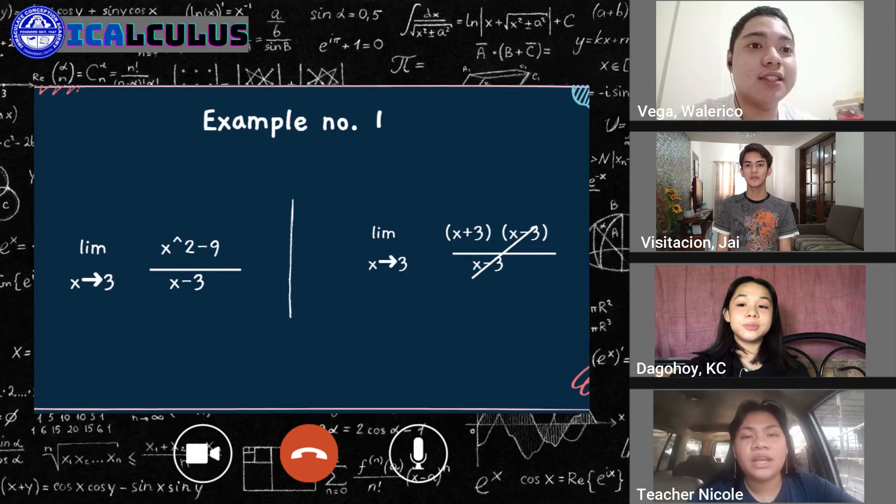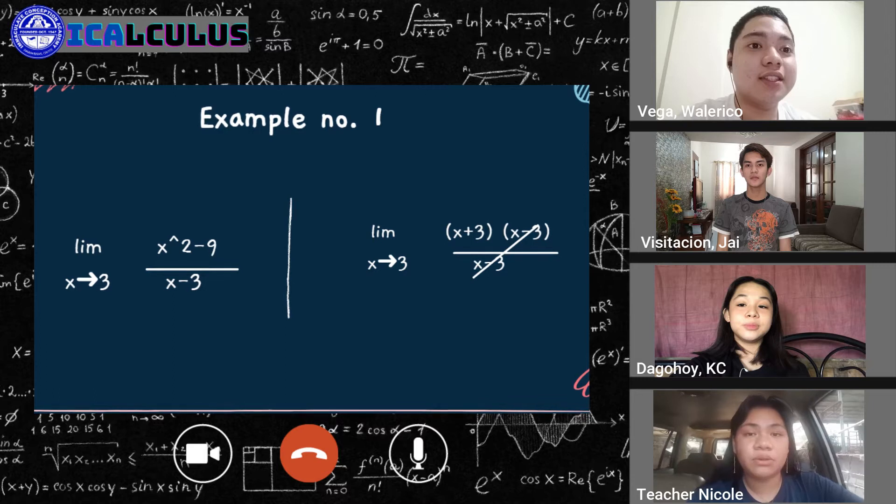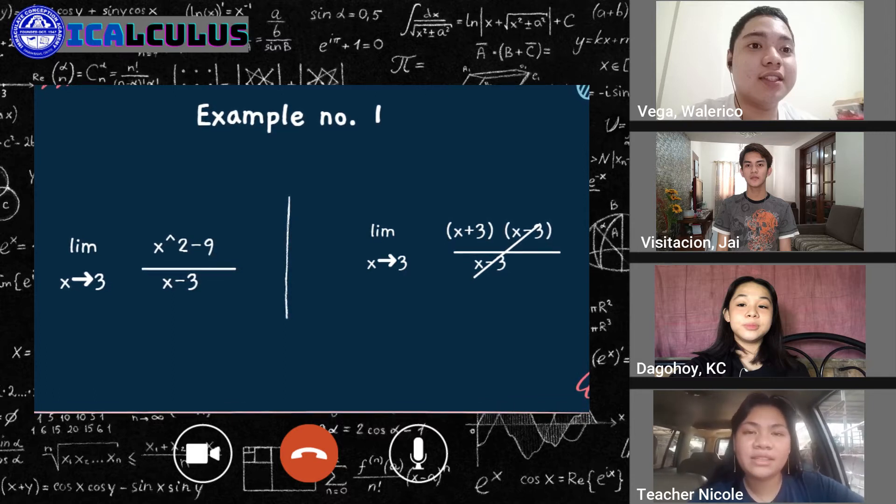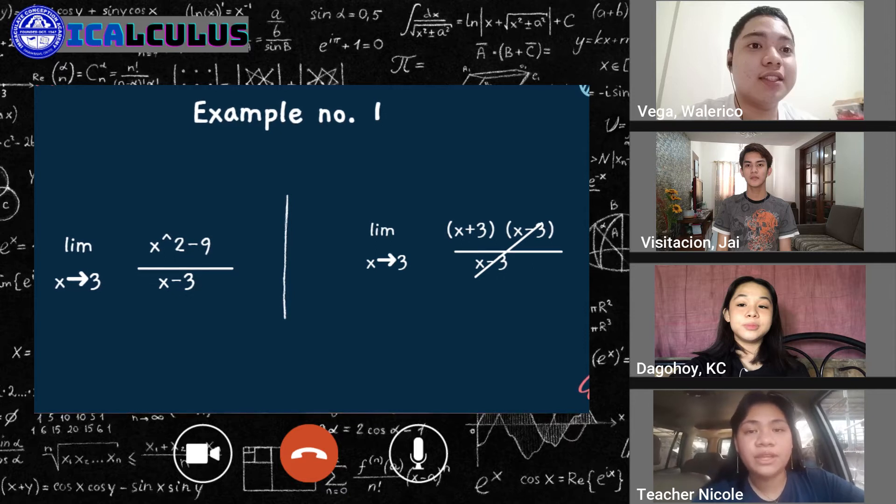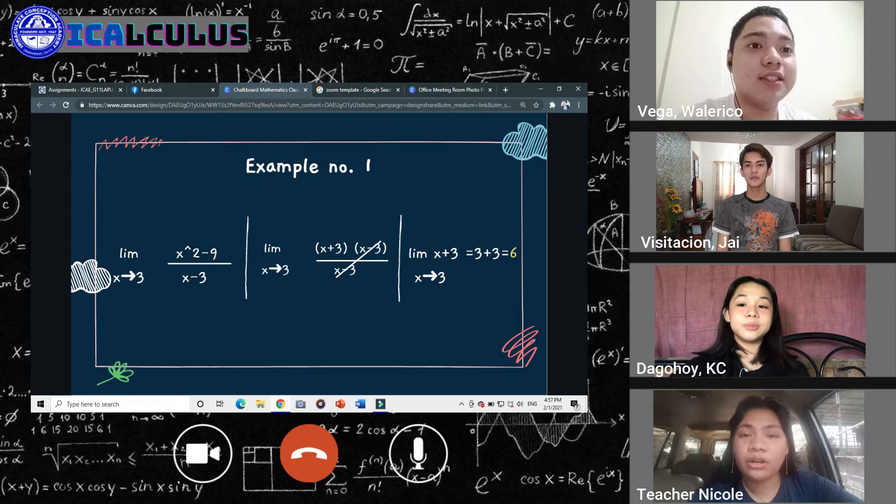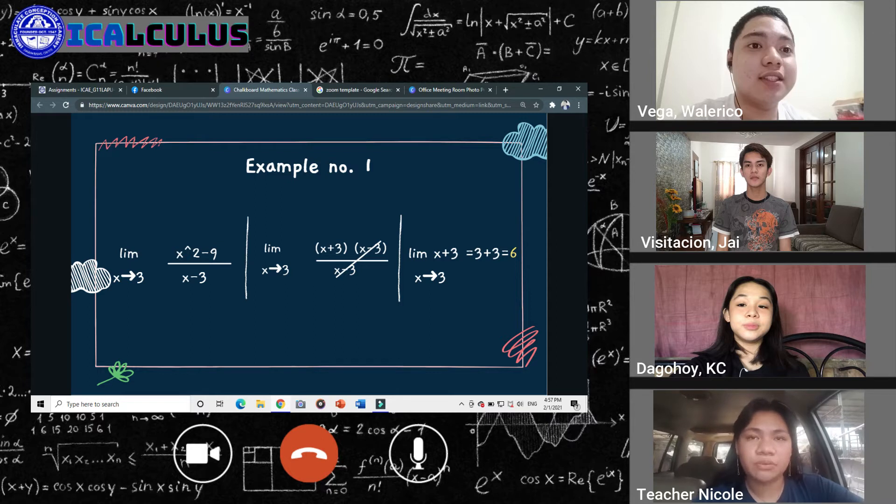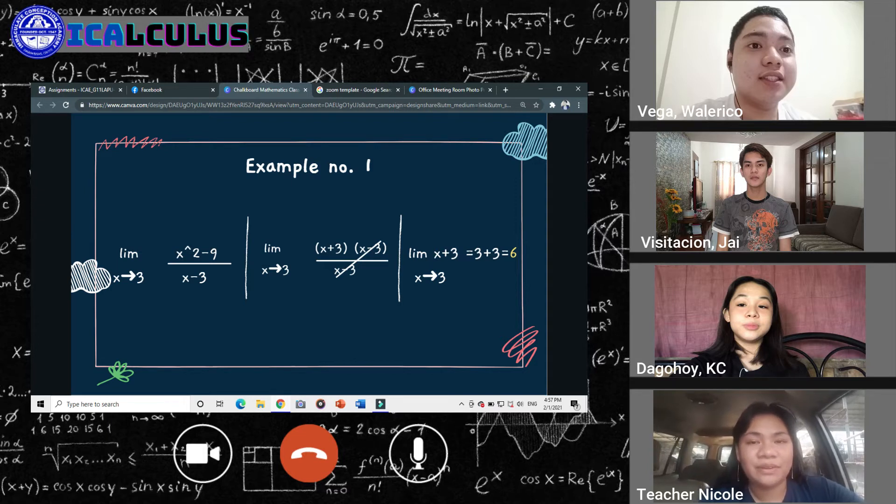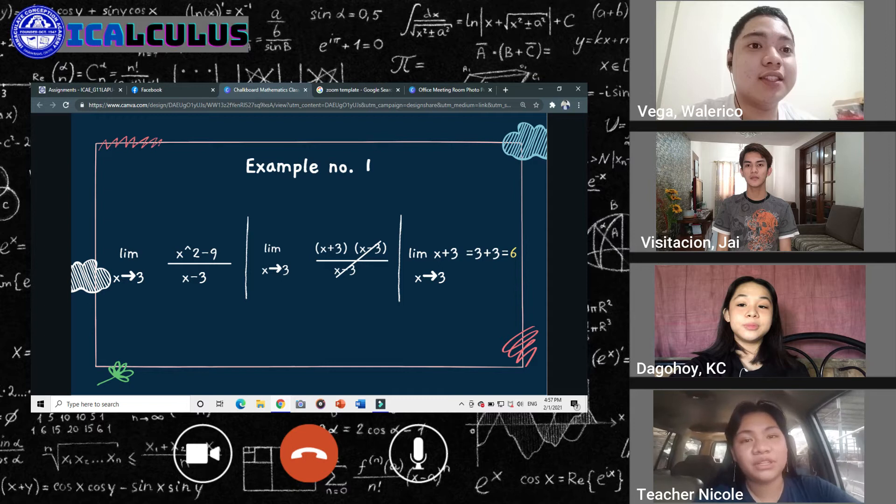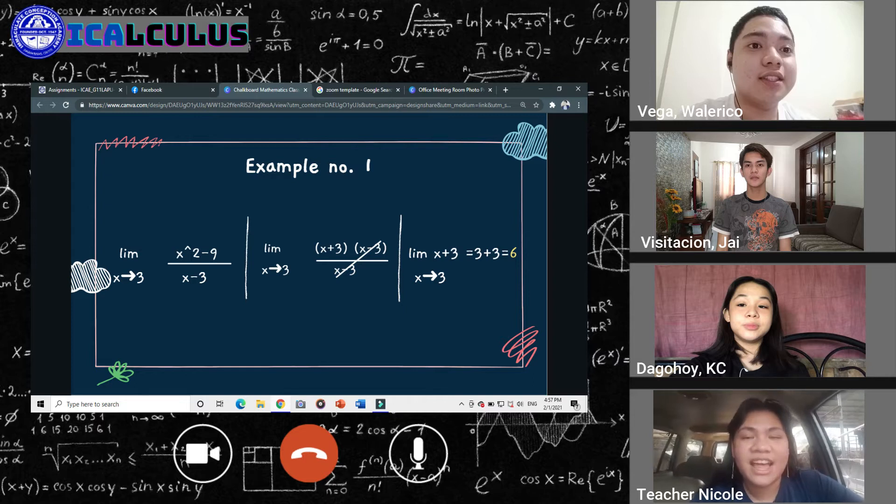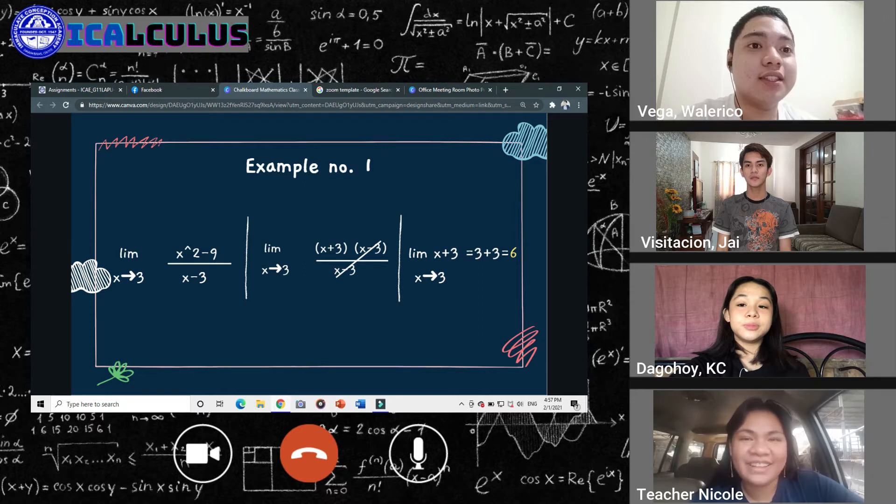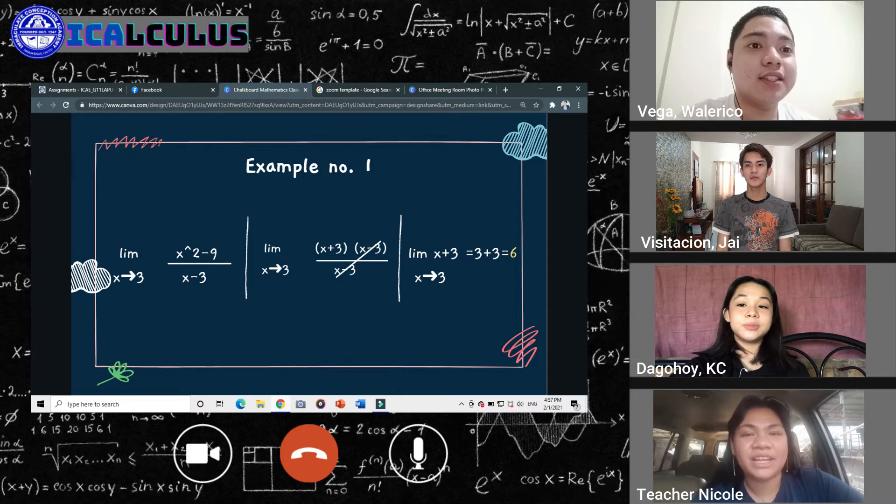Therefore, the factors of x squared minus 9 is x plus 3 multiplied to x minus 3 all over x minus 3. So now, you can see that x minus 3 is present in both the numerator and the denominator. Therefore, we can cancel them out, leaving us with x plus 3. Our simplified function will be x plus 3. So now that we have simplified the function, we can directly substitute. So 3 plus 3 is equal to 6. Therefore, our first example, which is the limits of x squared minus 9 over x minus 3 as x approaches 3, is equal to 6.